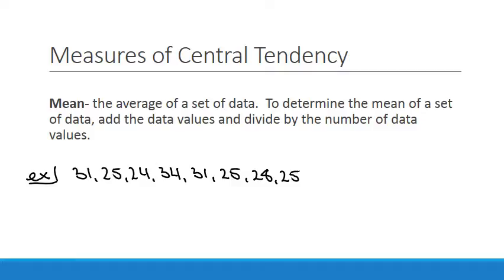So if I give you this data set which is just totally random: 31, 25, 24, 34, 31, 25, 28, 25. The first thing I have to do is add all that up and then I'll divide by the amount of items there.